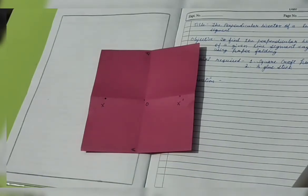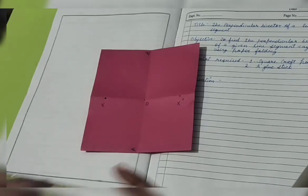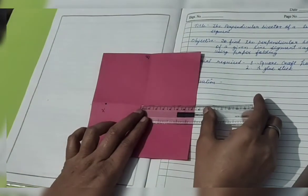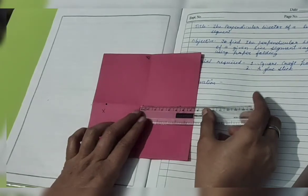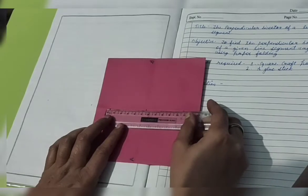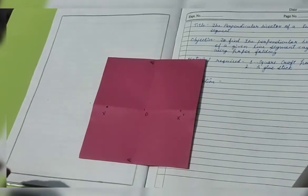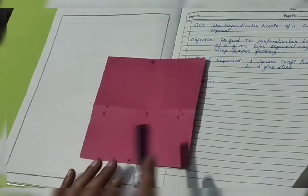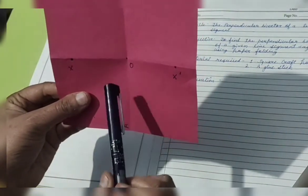Now can you tell me, are X and X dash equidistant from O or not? So for this we need ruler. I'm showing you, let us measure that they are equidistant from O or not. See, this is 5.4 around, and if I'm going to measure it, this is also similar - 5.4. You can just clearly see it.